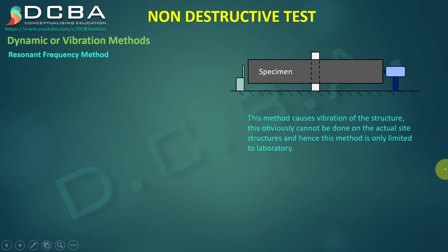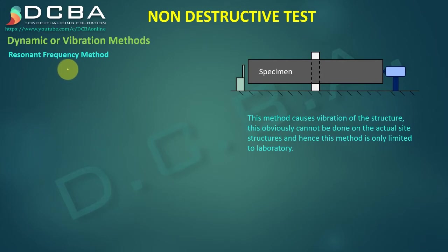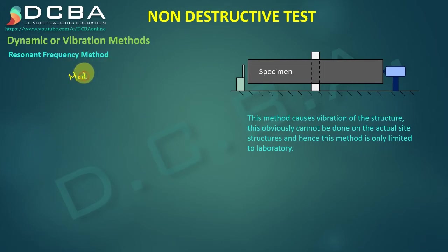In the resonant frequency method, the resonant frequency of a material is found — the frequency at which it vibrates violently. Unlike the single resonant frequency of a tuning fork studied in physics, a specimen actually has multiple resonant frequencies called modes: first mode, second mode, third mode, and so on.